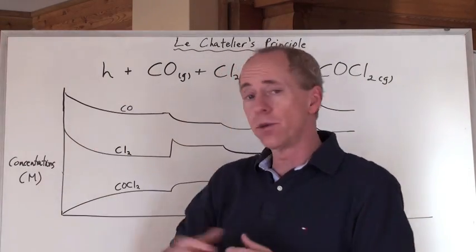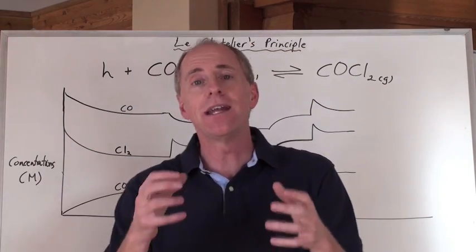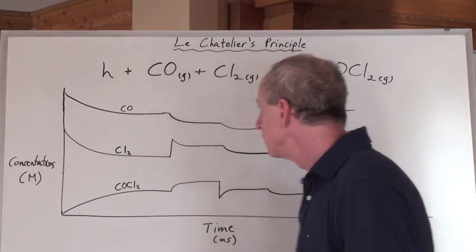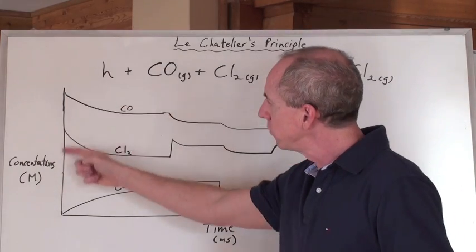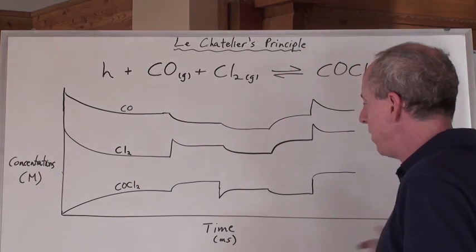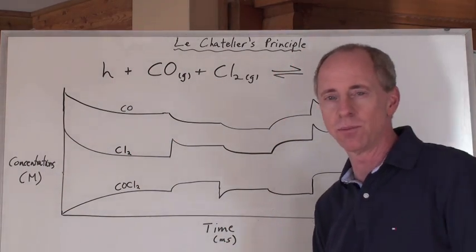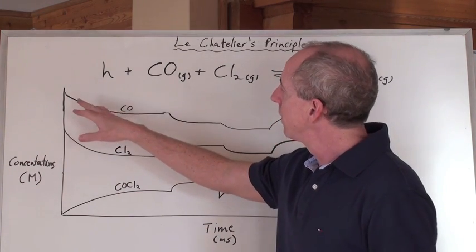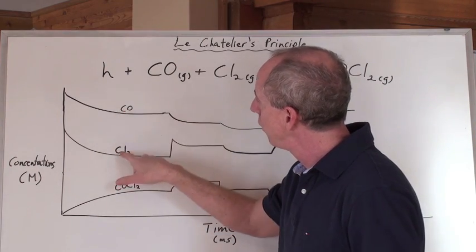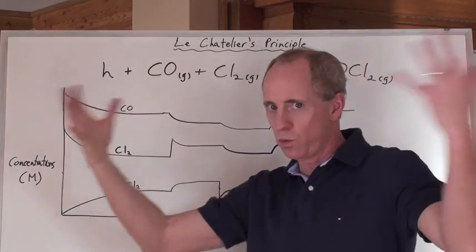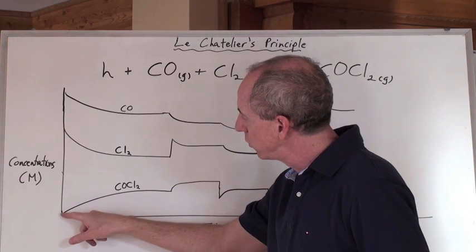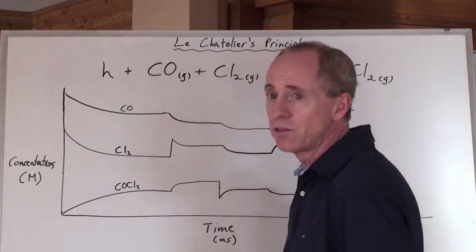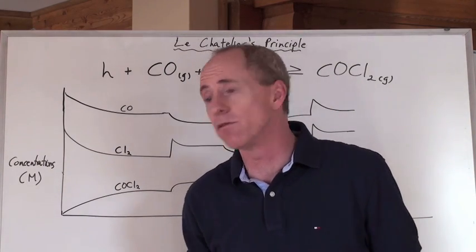And we happen to know that it's an endothermic reaction. So let's just look at the graph and see what it's telling us. We're graphing concentrations of these chemicals versus time. And I'm going to put the time in milliseconds because really these things happen pretty quickly. Now we've got initially in a flask CO and Cl2 at initial concentrations, whatever they are, and COCl2 starting off at zero. So we know that the reaction has to shift to the right to make some of that chemical that we have nothing of.